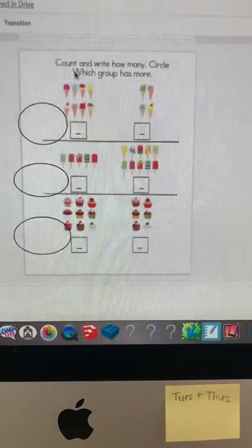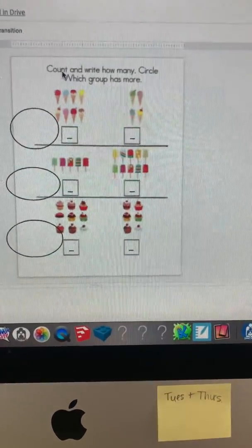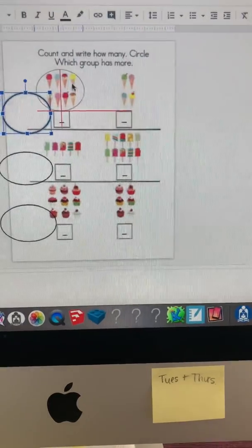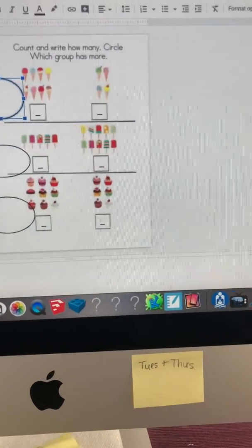On the last page, it says count and write how many, then circle the group that has more. Again, move the circle to show which one has more, then write in the numbers.